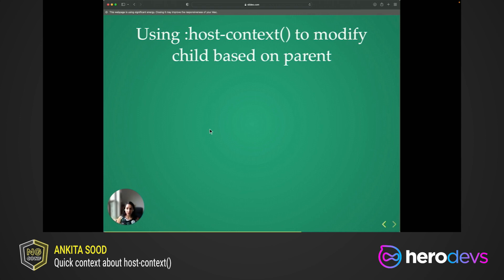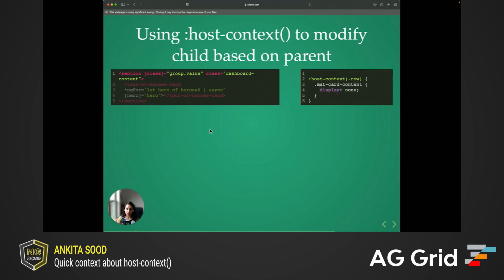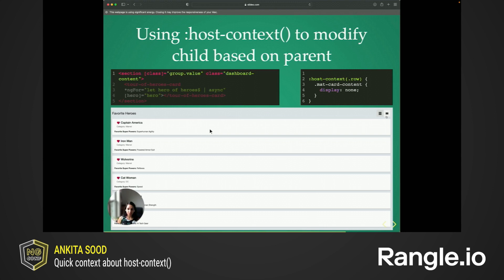One common requirement is to modify certain aspects of a component based on its parent. In this example, our host here — the cart component — can have different contexts. That is, the class that gets assigned based on the value of group.value. To use host context, we always need to specify the parent selector — that is, we need to provide the context in which our host is in. Inside the styles of the host here, we are able to modify how the content gets displayed based on whether we are displaying it in a row layout versus a column layout. So as you can see in this example, the favorite superpowers content gets hidden based on the context in which the card lives in.